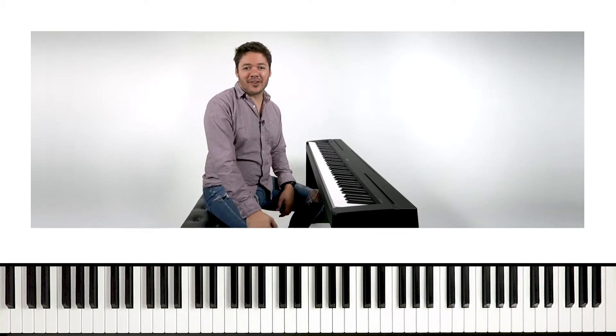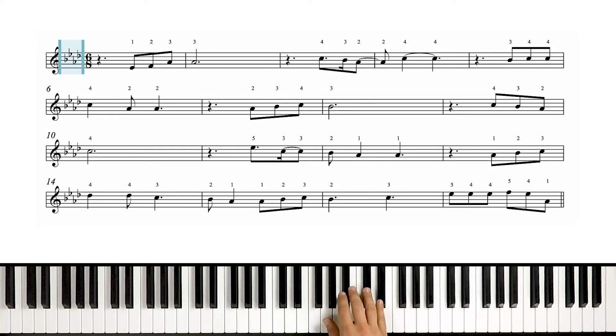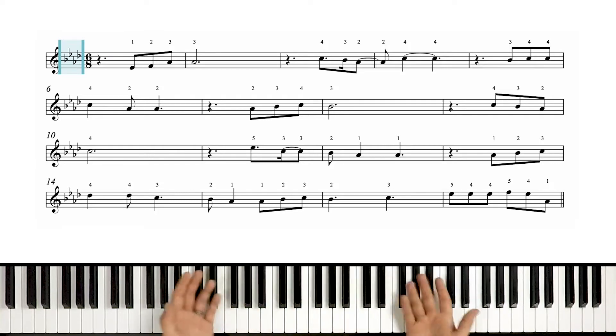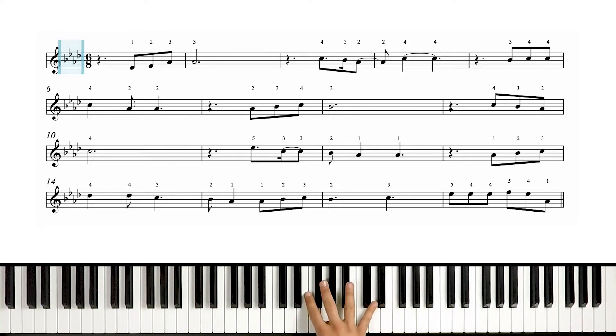Let's start with the right hand first. The key signature is four flats: B-flat, E-flat, A-flat, and D-flat. That tells us, of course, we're in the key of A-flat, or F minor. Those are the relative keys that share this four-flat key signature.